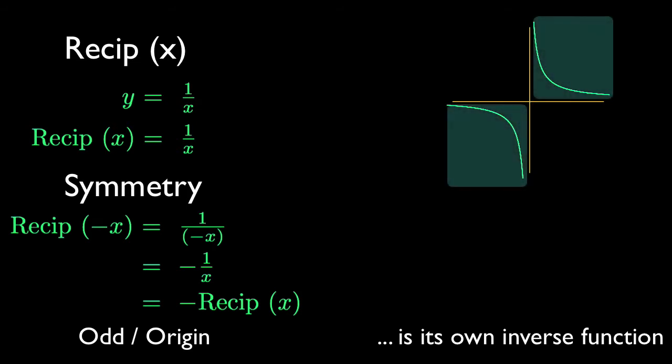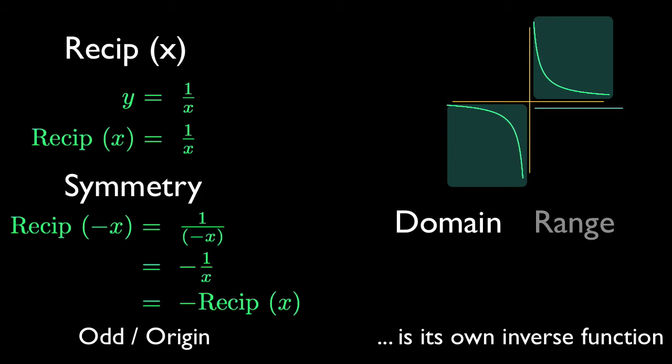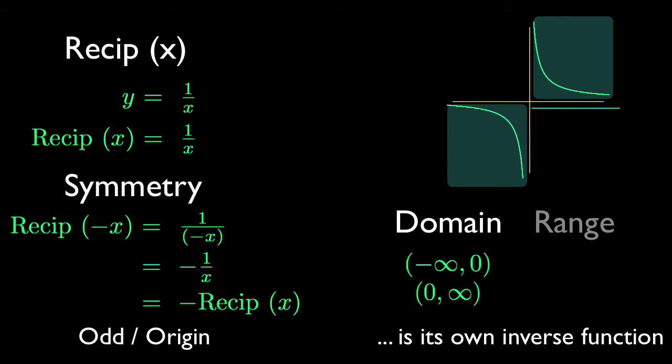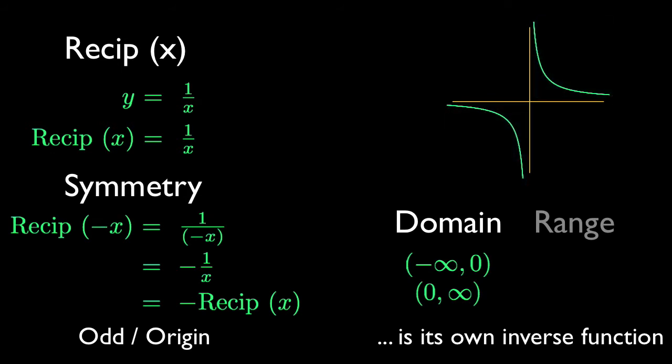This function has two continuous regions defining its domain and range. It's discontinuous at x equals 0, because you can't divide by 0. Its domain is given by the disjoint intervals from negative infinity to 0, and 0 to positive infinity. Because it is its own inverse, its domain is also its range.